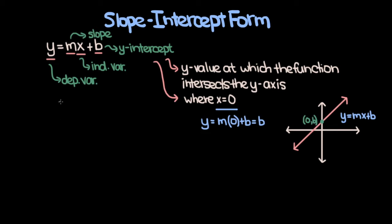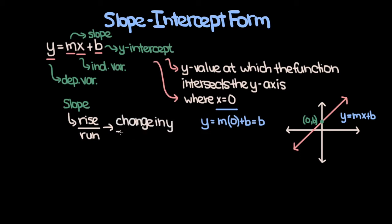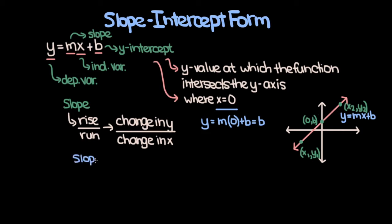Now let's talk about slope. You'll often hear the slope described as rise over run — essentially the change in y-value between two points on a line divided by the change in x between those same two points. So if we have two points with coordinates (x1, y1) and (x2, y2), the slope would be y2 minus y1, divided by x2 minus x1.